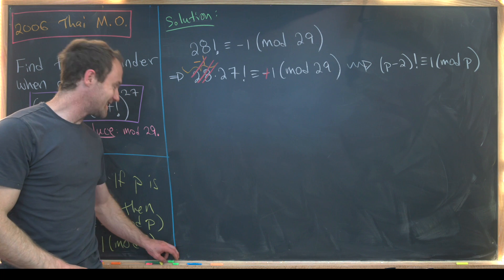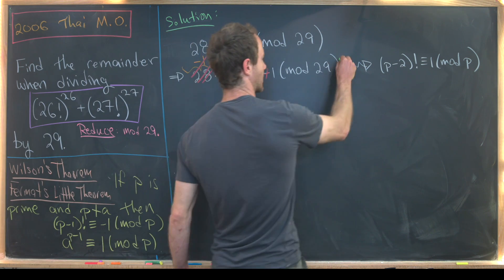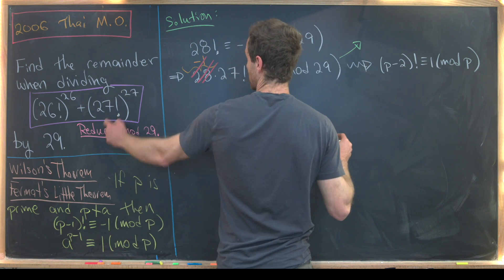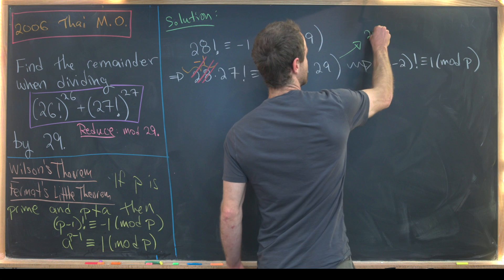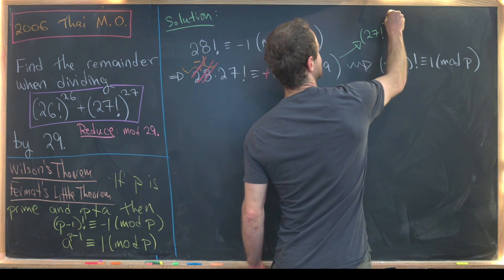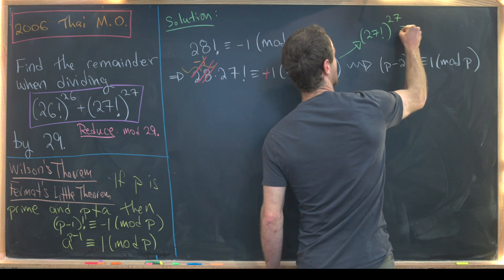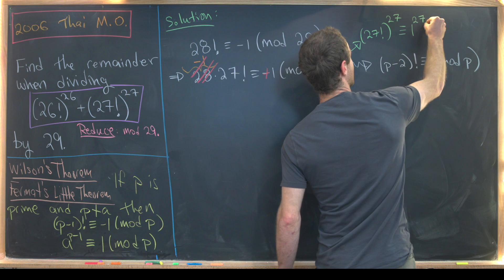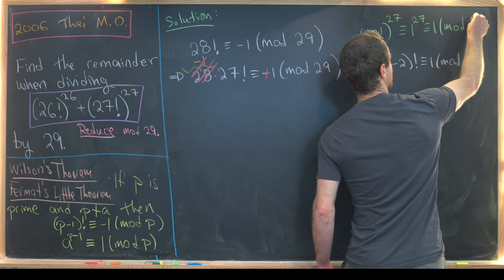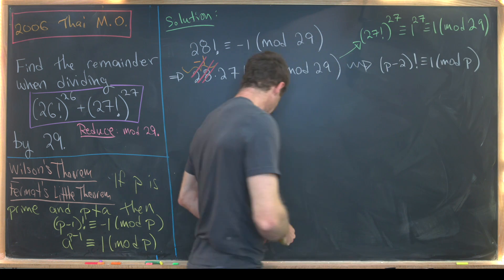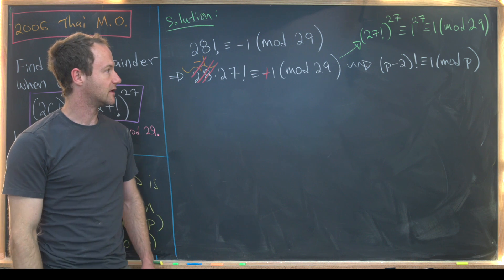But notice that this takes care of a lot of this part. So this 27 factorial to the 27 can now be simplified very quickly. That is congruent to 1 to the 27, which is congruent to 1 mod 29. So that portion of the problem is taken care of.